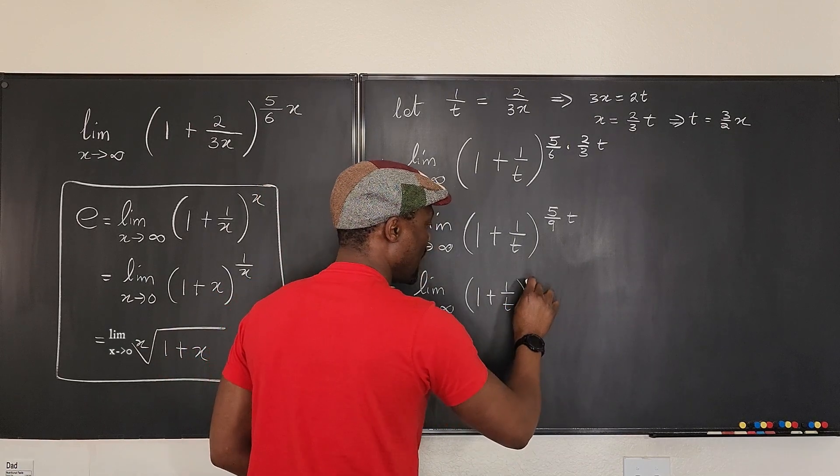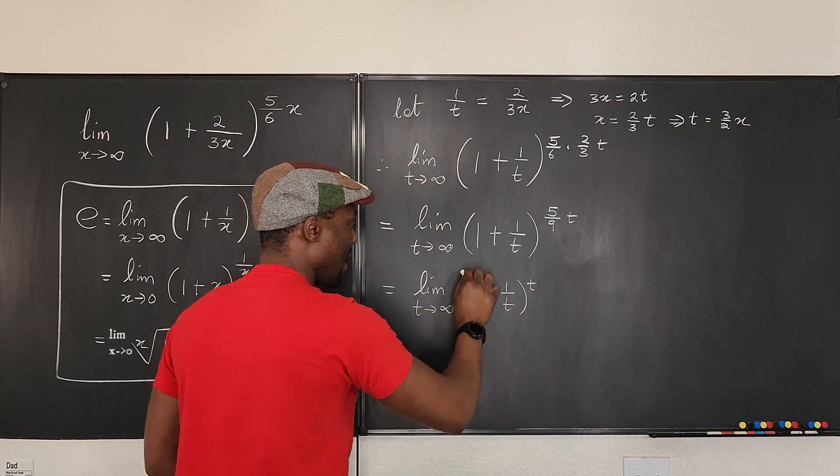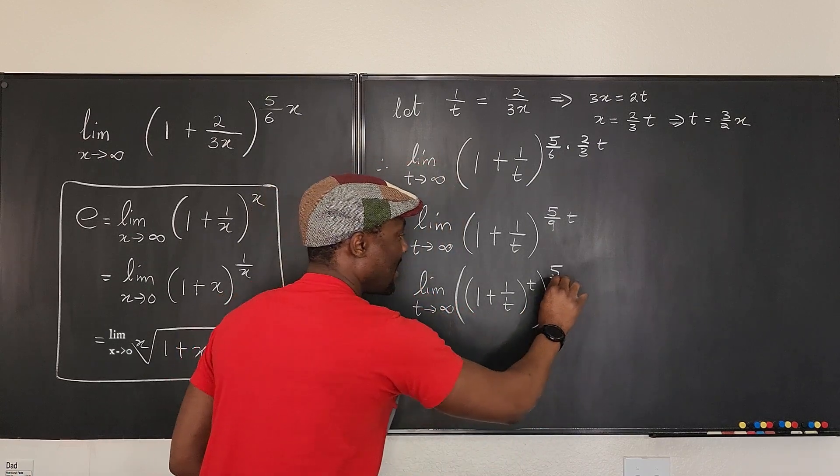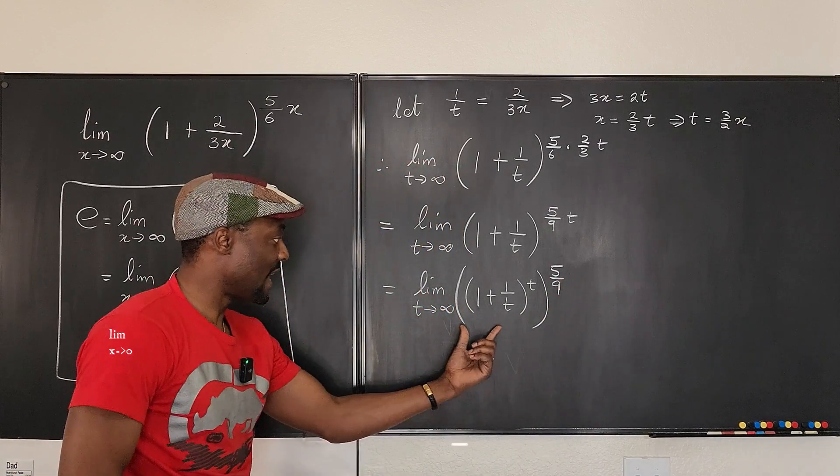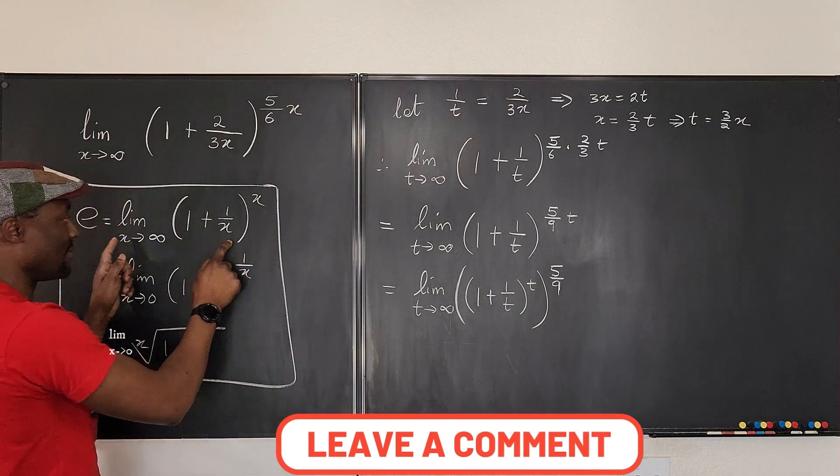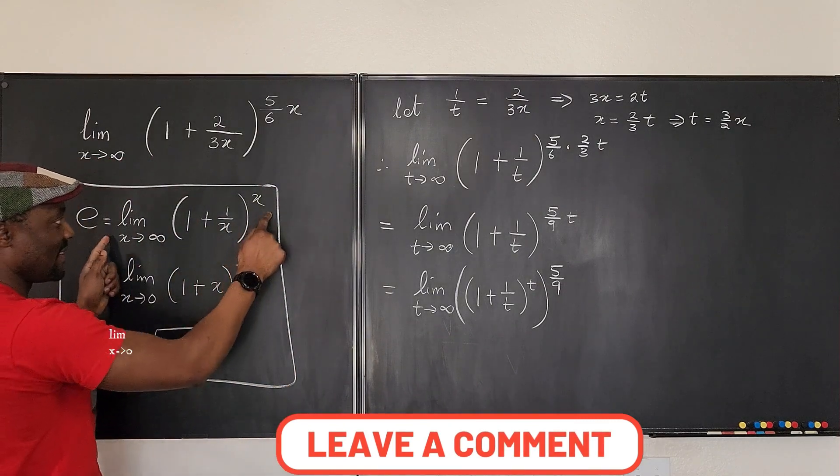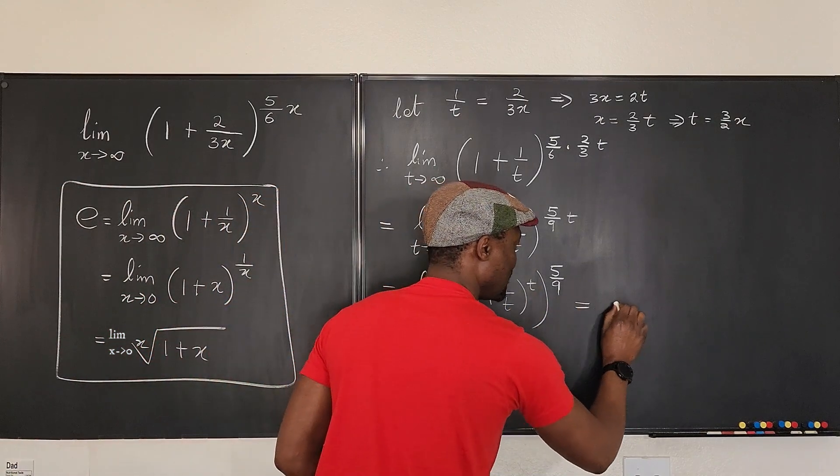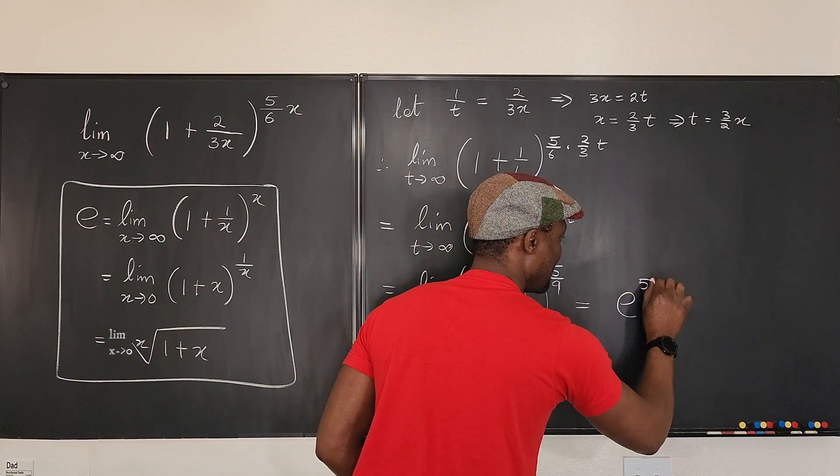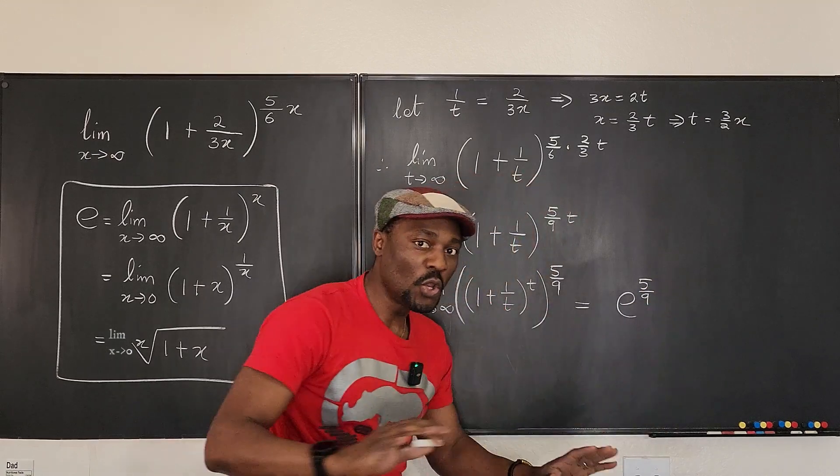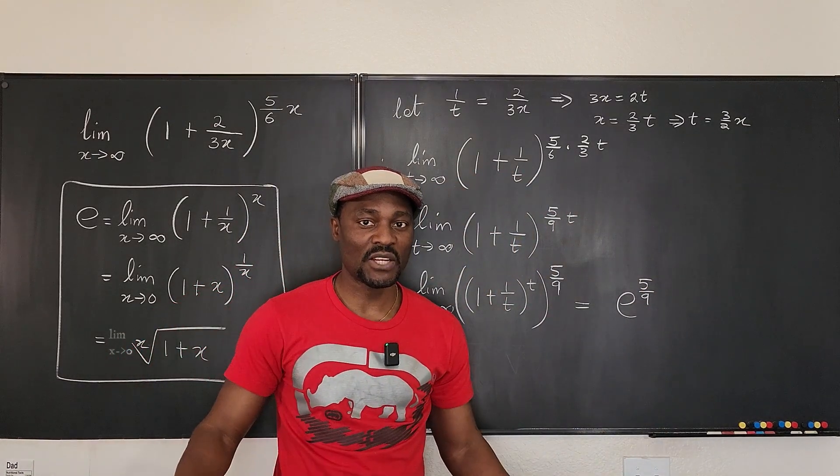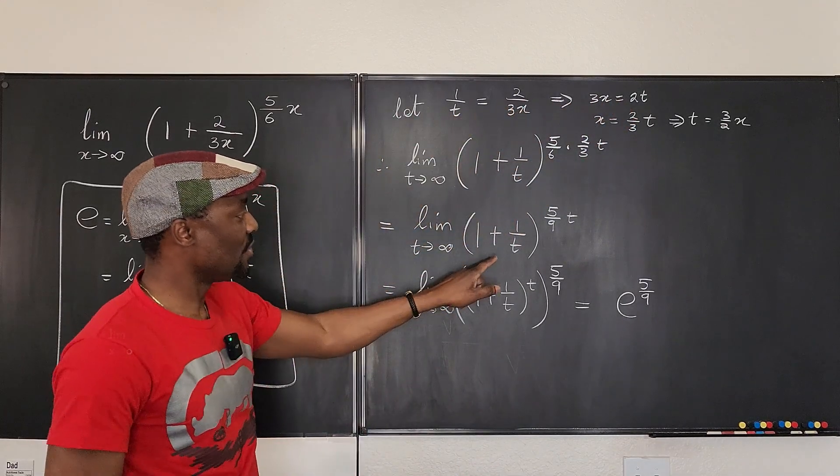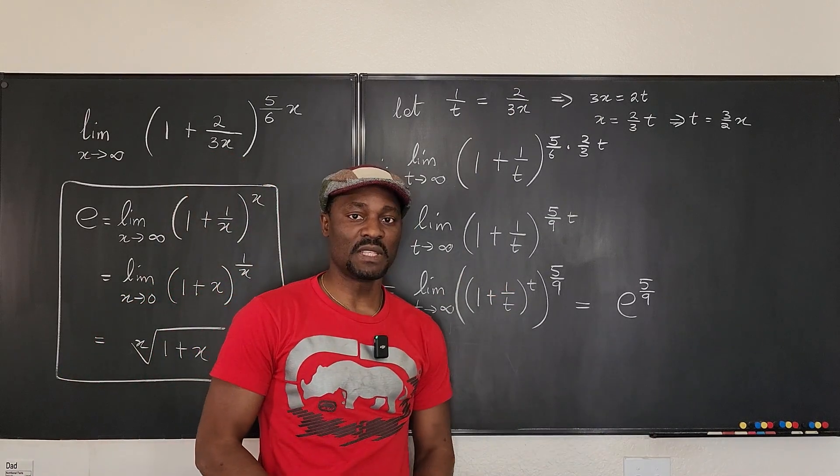Which is the same thing as the limit as t goes to infinity of 1 plus 1 over t raised to power t times e raised to power 5 over 9. Do you see that? Now we know that this is e from this definition. You see this? Is e. So this is equal to e raised to power 5 over 9. No L'Hôpital's rule, no differentiation, no natural log. All you did was just simple substitution and you generated what e is and now you have what your limit is.